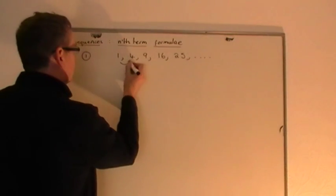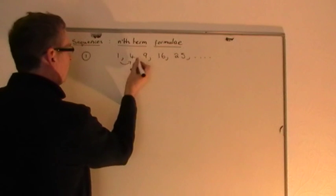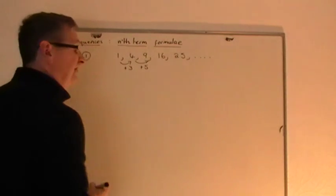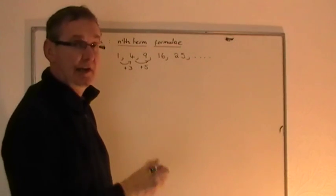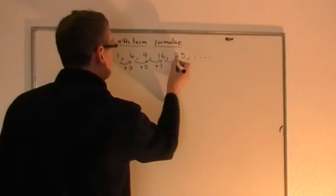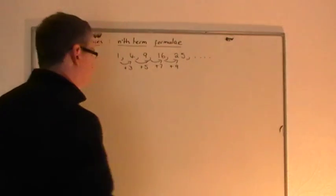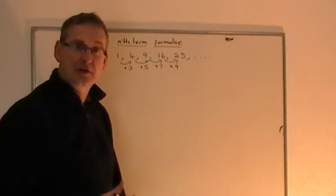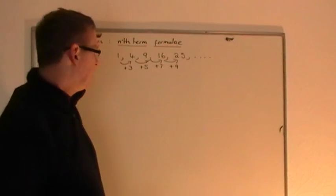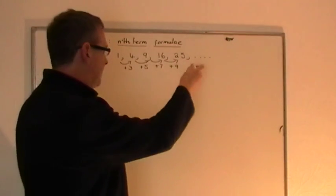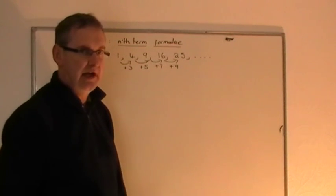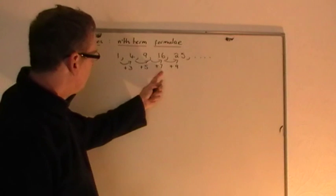So what you do is the usual process. You say, what do I add from 1 to get to 4? You add 3. Then from 4 to 9 you add 5. From 9 to 16 you add 7. From 16 to 25 you add 9. You can see that these numbers are not constant — each difference is getting bigger. So it's not going to be simply 3n as the start of the nth term formula.